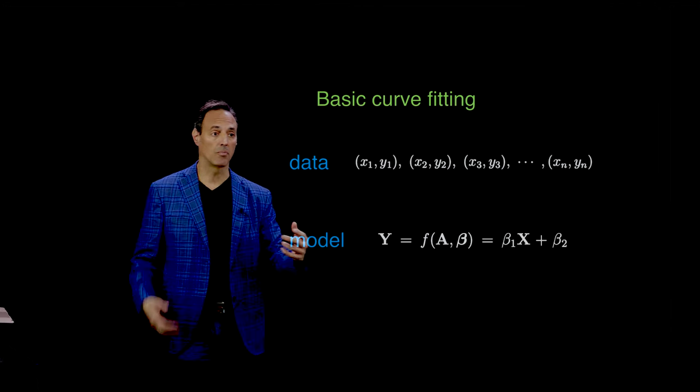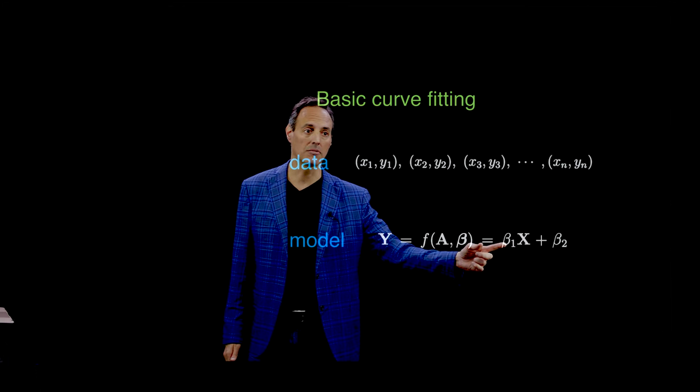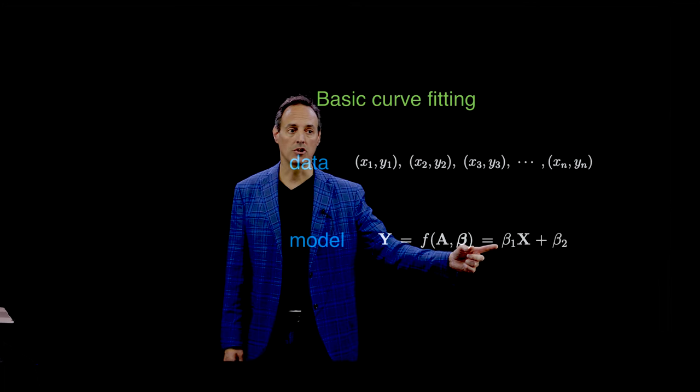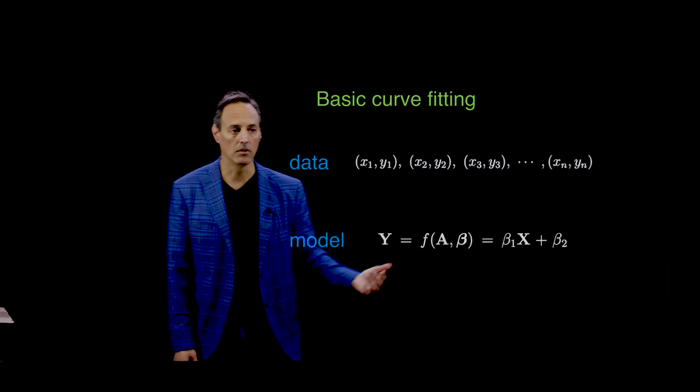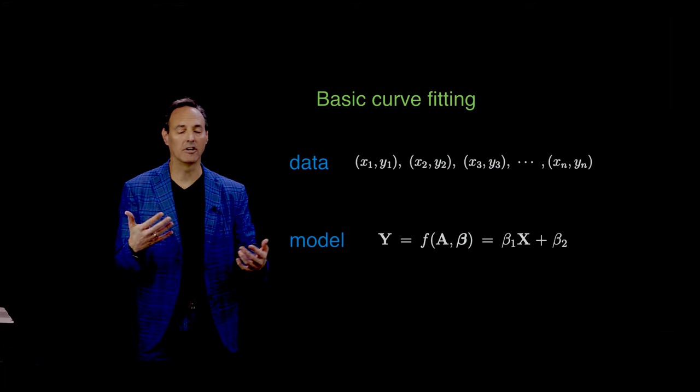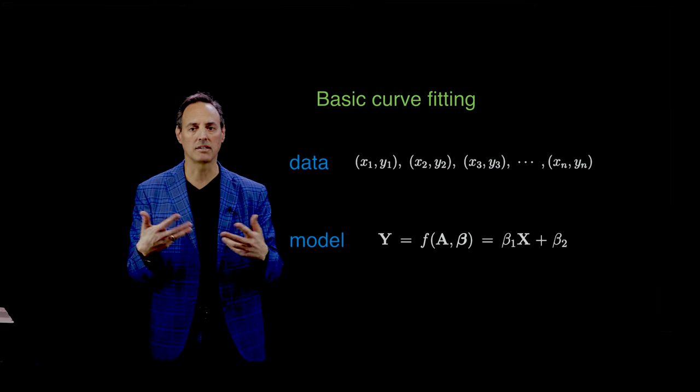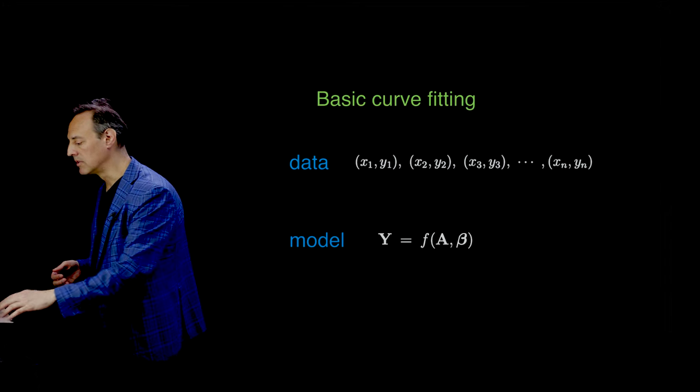It's an optimization problem. In the last lecture, we made a linear model and did least square regressions. This is fine for line fits, curve fits, parabola fits. But now we're broadening this to other kinds of models.